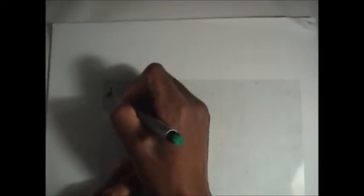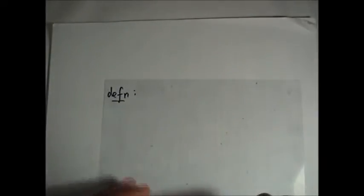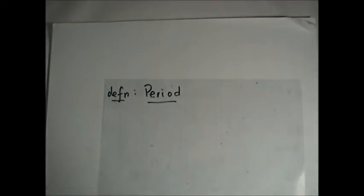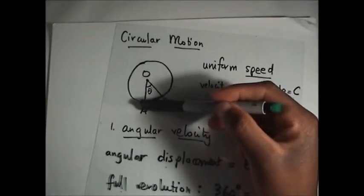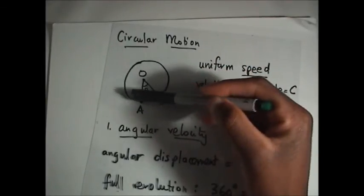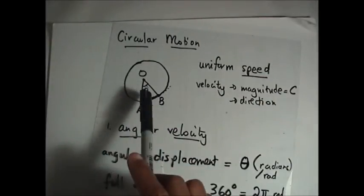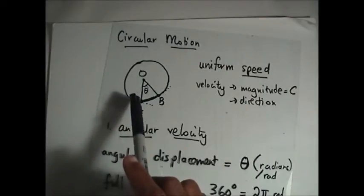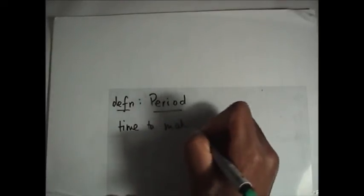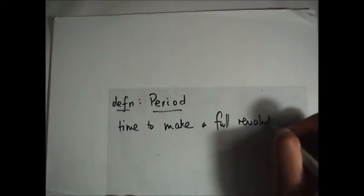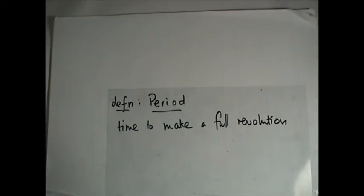Now we come to another definition: the period. For this object going round in a circle, it's going to take some time to come back to point A. If it leaves A at time t = 0, it takes some time to make a full revolution. The time to describe the full circle once is known as the period. Period is the time to make a full revolution or full circle.